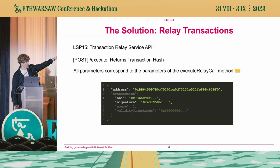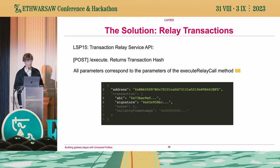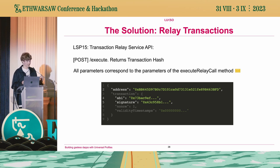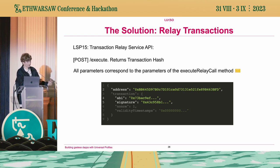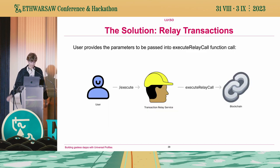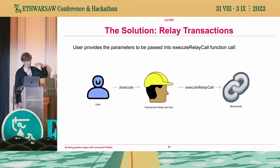The ABI is just the payload — the content of the action the user wants to perform, like the instruction to mint this NFT, send this token, or change this data key. The signature is that message signed to prove that this address wants to execute this task. All of this is sent to the relay service, and the relay service inputs these parameters into the execute relay call method on the Universal Profile. So the user calls slash execute on the transaction relay service, and the relay service passes that into the smart contract.